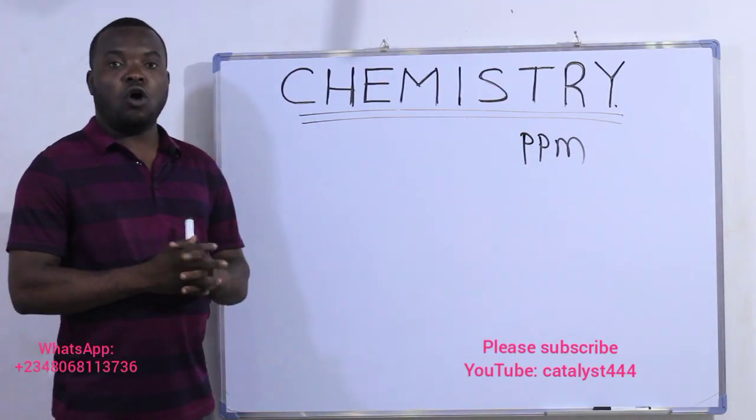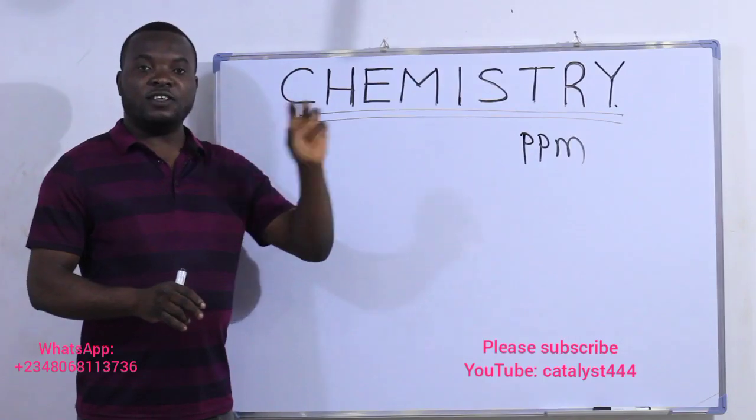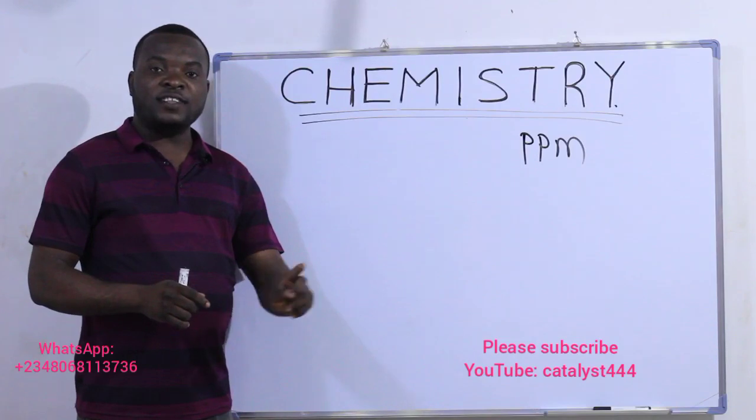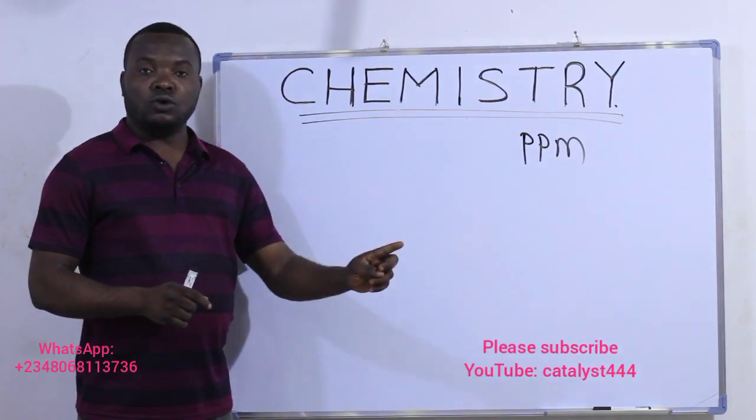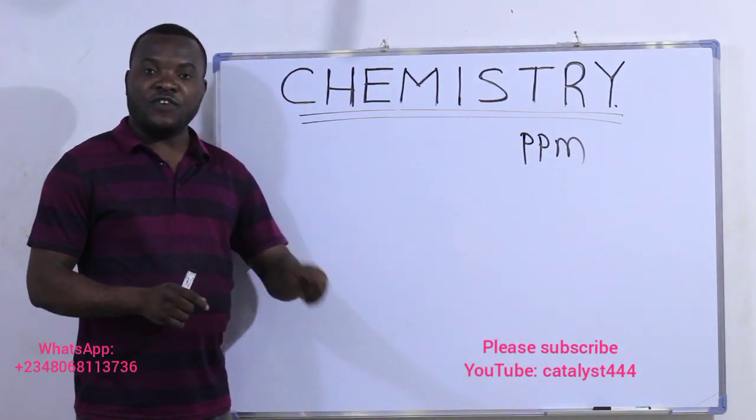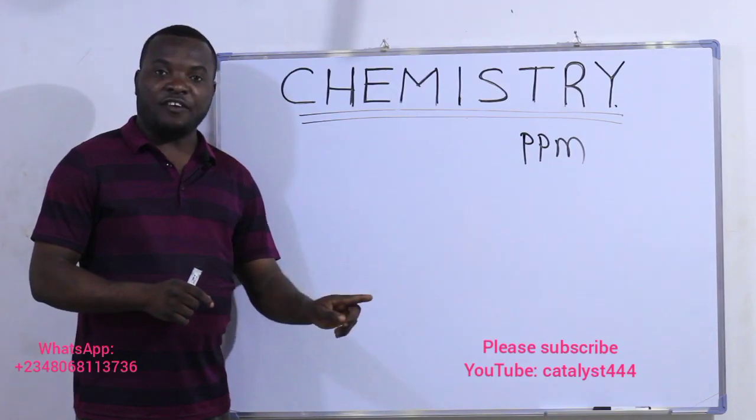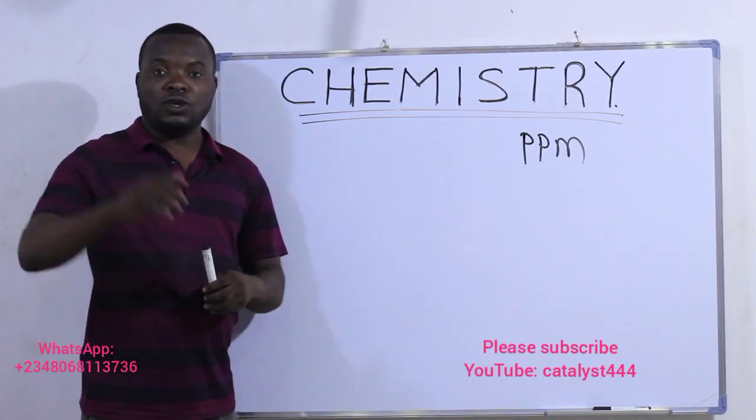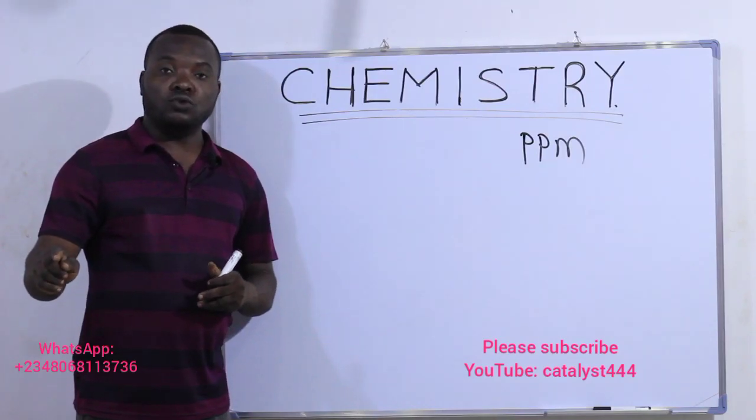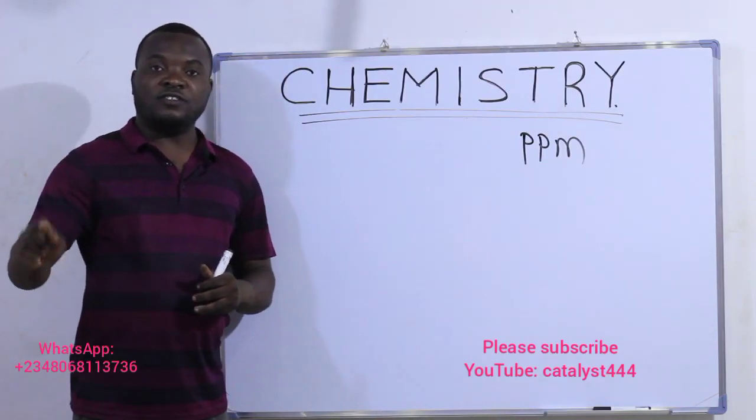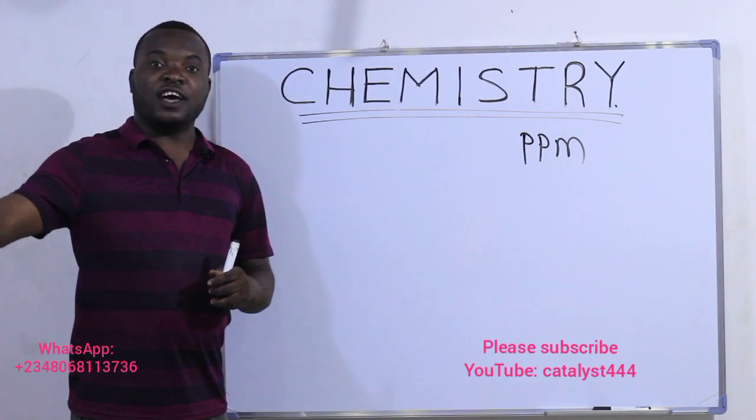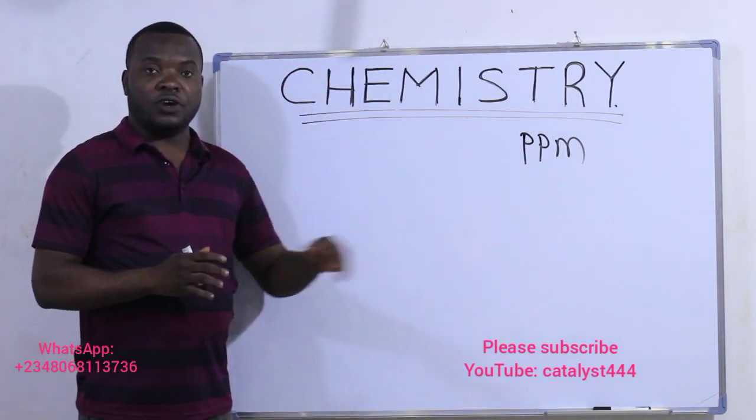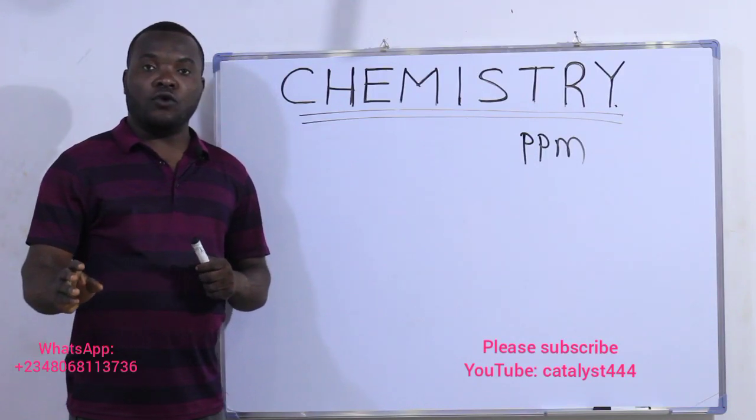Very easy. All you need to do: get the mass given to you in the question, get the volume. Convert the mass from whichever unit it carries to milligram units. Convert the volume from whatever unit it is given to liter units. Which means, convert your mass to milligram, convert your volume to liter.